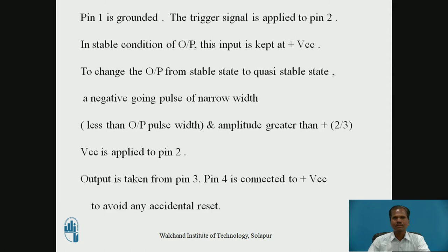In stable condition of output, the trigger input is kept at plus VCC voltage level. To change the output from stable state, i.e., low voltage level, to quasi-stable state, i.e., high voltage level, a negative going pulse of narrow width — less than the output pulse width — and amplitude greater than two-thirds VCC is applied to pin number 2, the trigger input of IC555. The output signal is taken from pin number 3, and pin number 4 is connected to plus VCC to avoid any accidental resets.